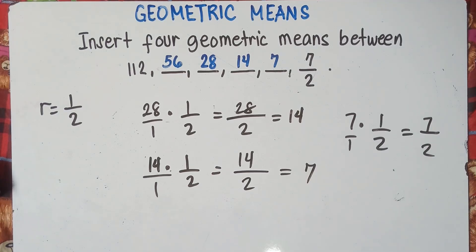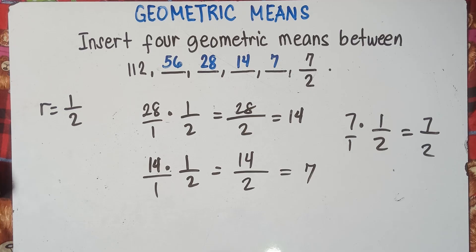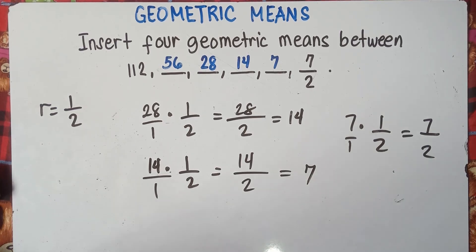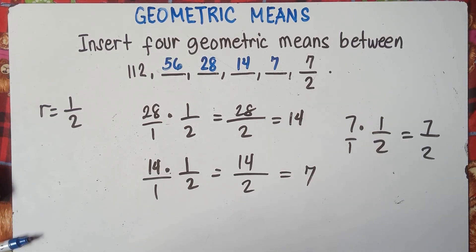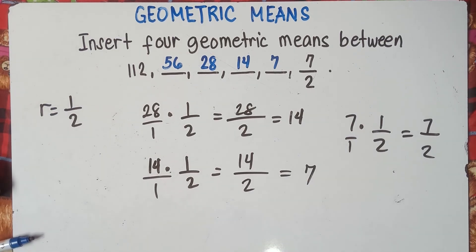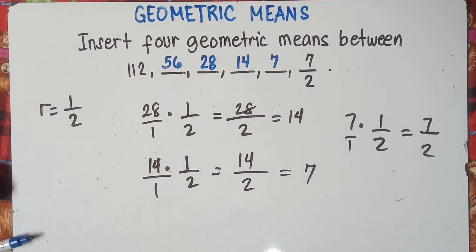That's it, class. That's how you find the geometric means between the given terms. You find the common ratio, and once you get the common ratio, you multiply. I hope you learned something new today.